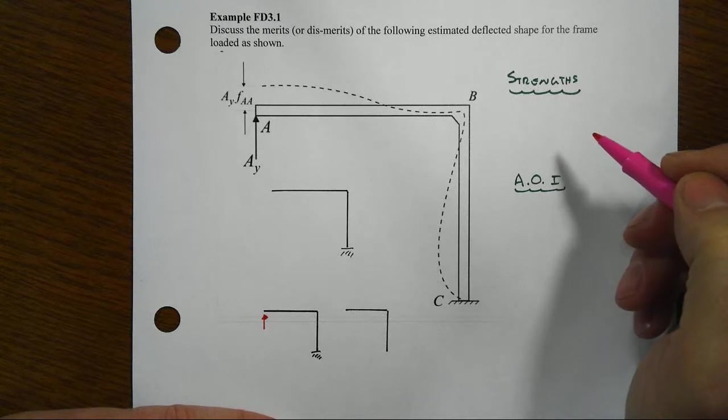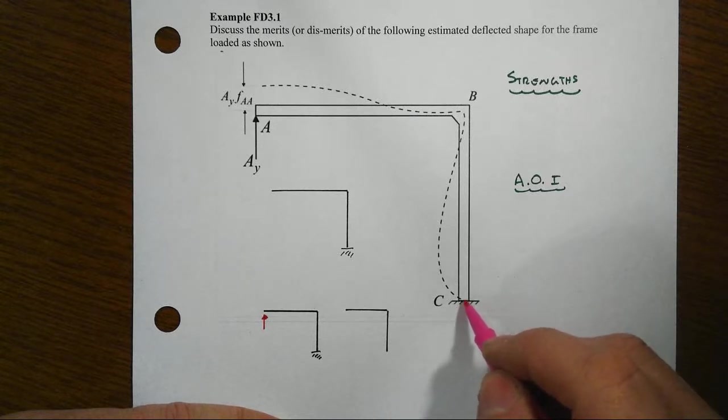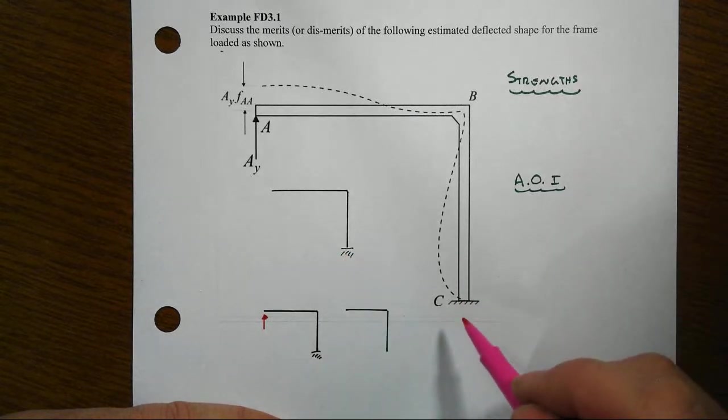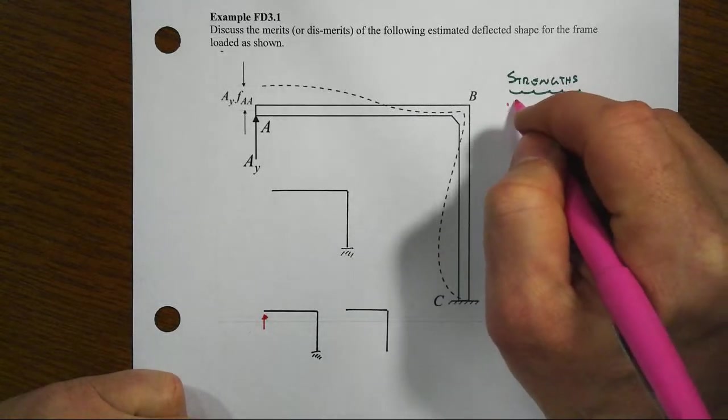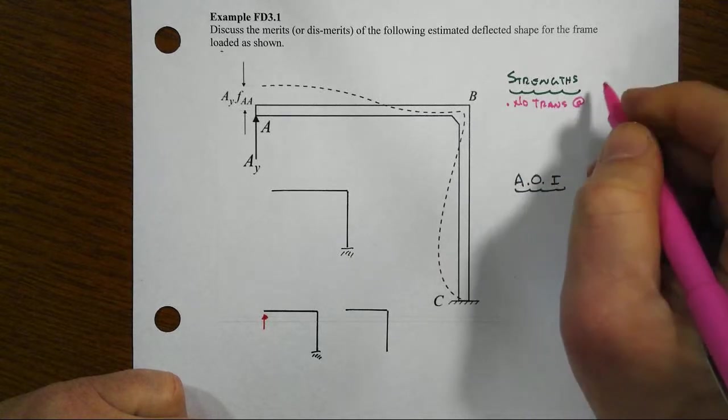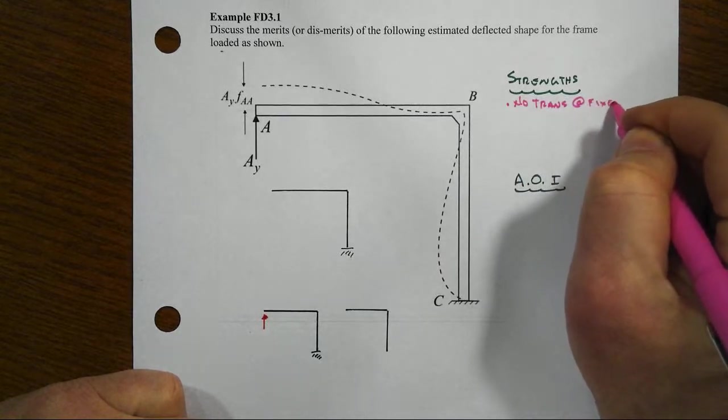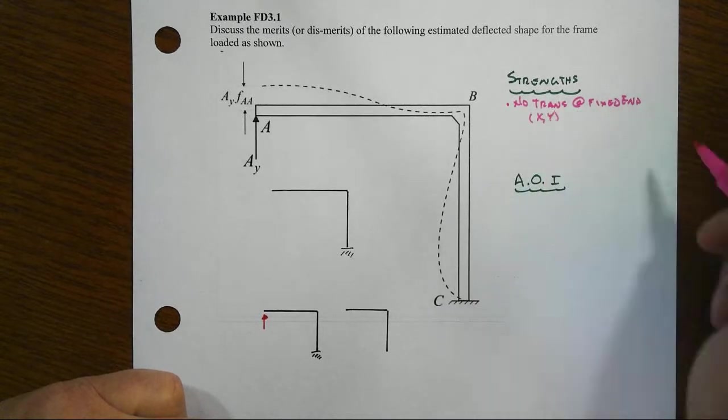The only location of connection to the exterior world is down here at the base, and that's a fixed end, and we have no translations at the fixed end, and that would be in either the x or the y direction, so that's good.